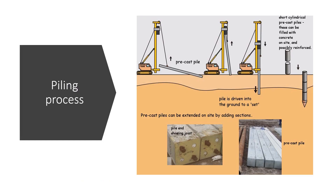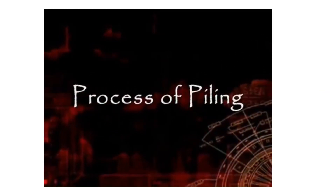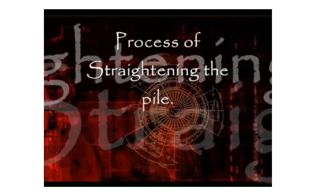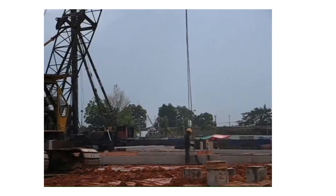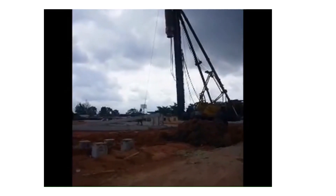Driven piles are created by hammering piles into soil up to a depth of more than 40 meters. After bringing in the piling machine, the first pile — also called the starter pile or initial pile — will be driven into the ground following the pile point shown in the construction drawing. The initial pile is driven until maximum penetration is reached. If the initial pile has been fully driven into the ground, a second pile or extension pile will be jointed to the initial pile and driven again. The extension pile is driven to maximum depth as the initial pile.